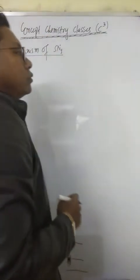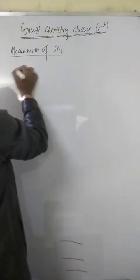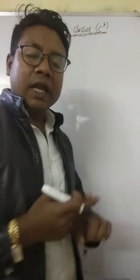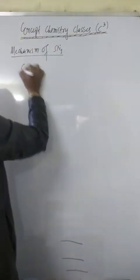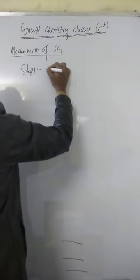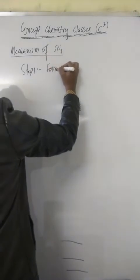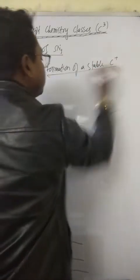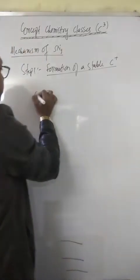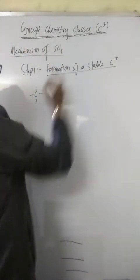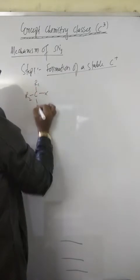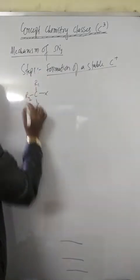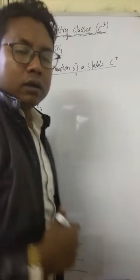So we must take a tertiary electrophile. In the first step, which is formation of a stable carbocation, you need to take a tertiary carbocation. So I take this R1, R2, R3 - these R1, R2, R3 are different alkyl groups.